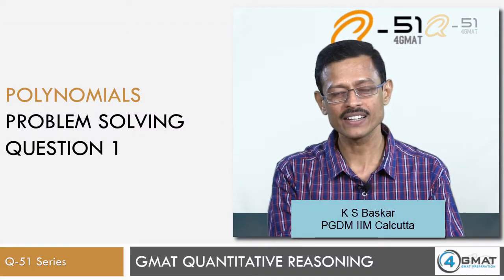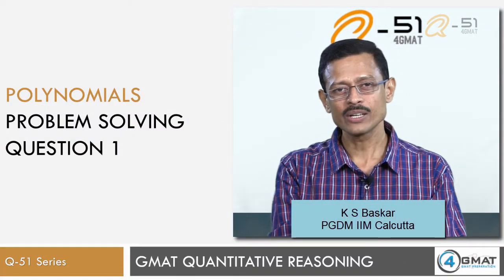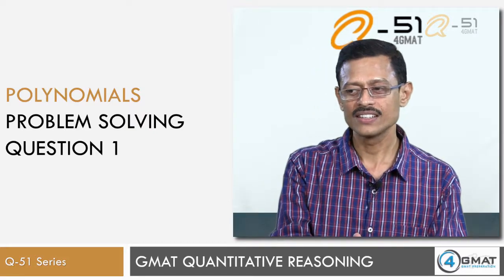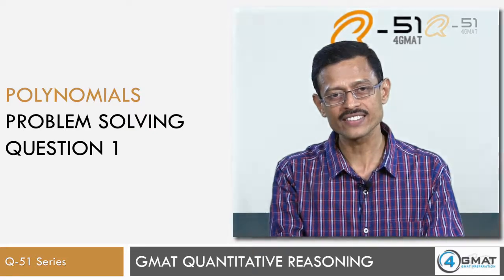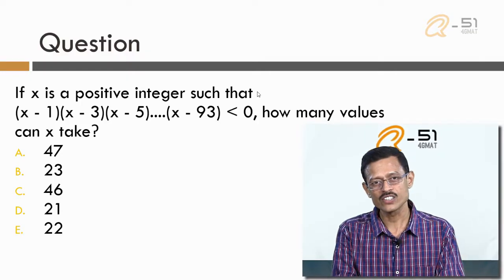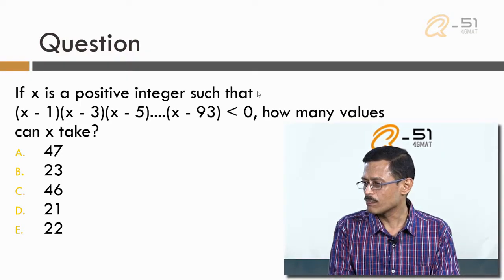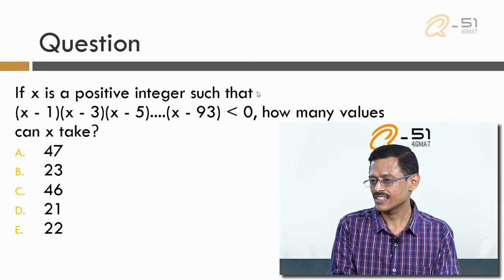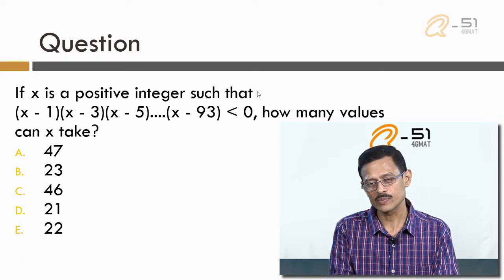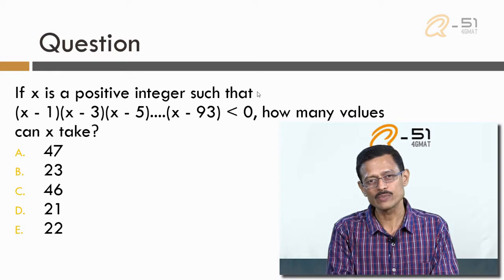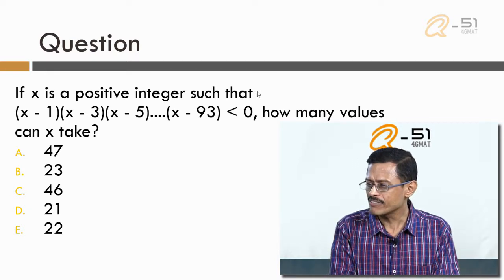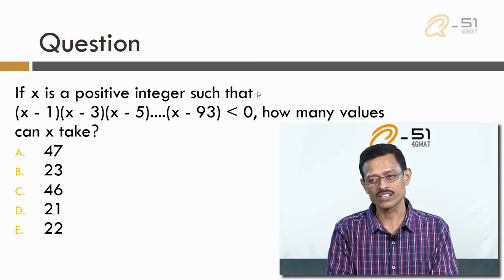Hello, I am Bhaskar from 4GMAT. Today we are going to look at a problem solving question from the topic polynomials. It is a part of our Q51 series. The question reads as follows: if x is a positive integer such that (x−1)(x−3)(x−5)···(x−93) is less than 0, how many values can x take?